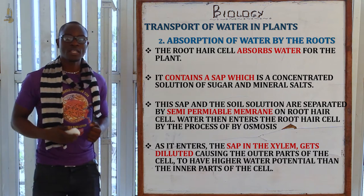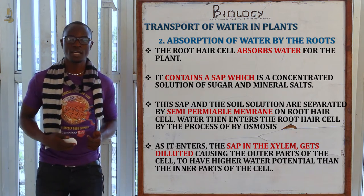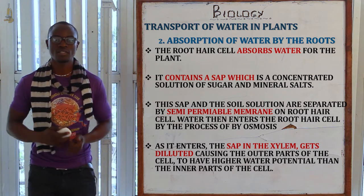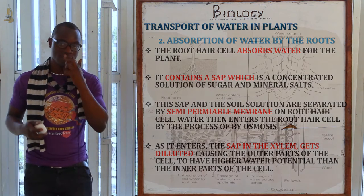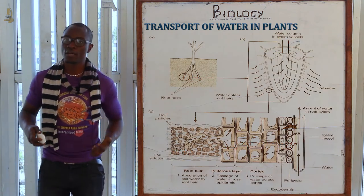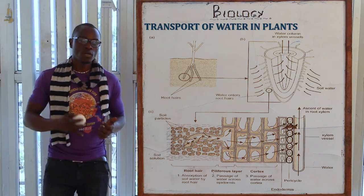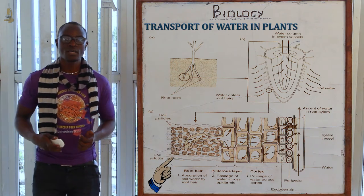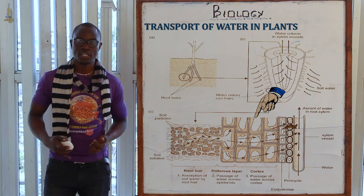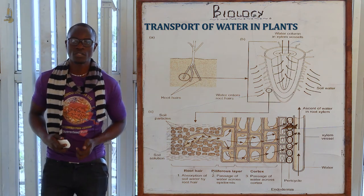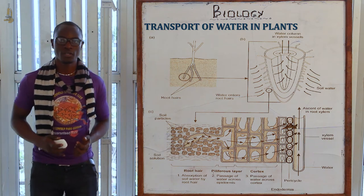After the water has entered the root hair cell, the sap gets diluted, and this causes the cell to have a higher water potential than the inner parts of the cell, which have a very low water potential. The water will then pass by osmosis from the root hair cell into the inner cells of the cortex, and this process continues until the water has eventually reached the xylem vessel.